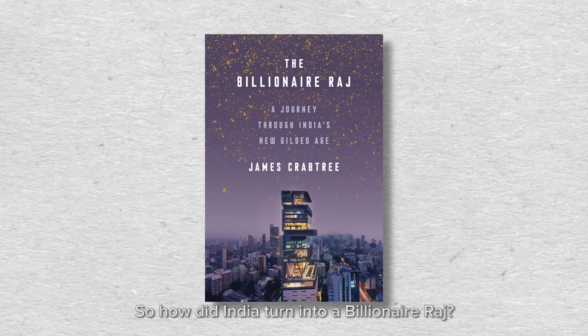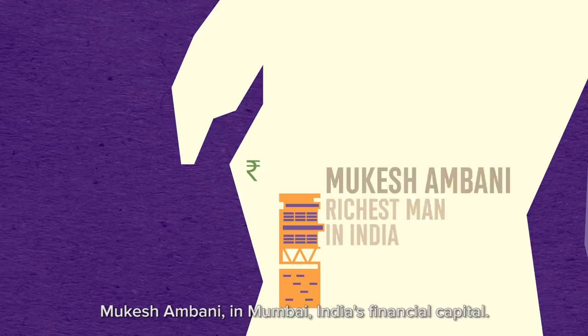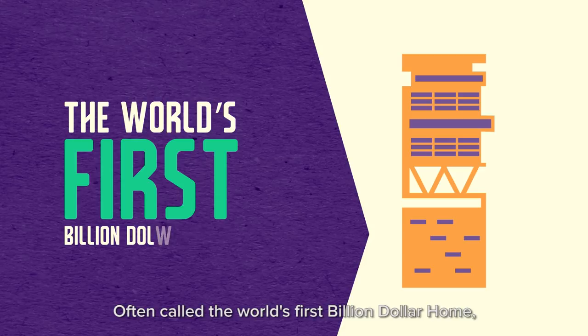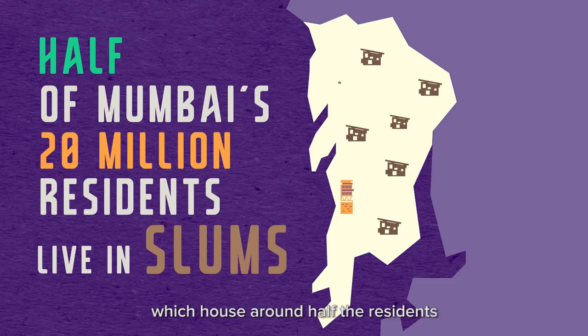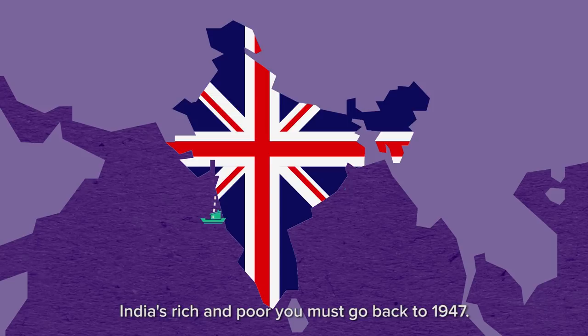This is the home of the richest man in India, Mukesh Ambani, in Mumbai — India's financial capital. Often called the world's first billion-dollar home, it is 160 meters tall and boasts a range of luxurious additions. Yet all around Mumbai you see slums, which house around half the residents in India's richest city.